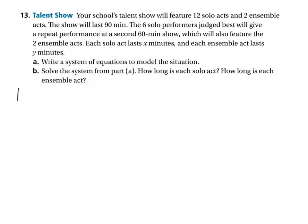So what do we get? Well, we've got 12 solo acts, each taking, here it says, each solo act lasts X minutes. The 12 solo acts lasting X minutes plus two ensemble acts. And they're telling us each ensemble act lasts Y minutes. So two ensemble acts at time Y will equal the total 90 minutes. So that's one equation. Twelve solo acts at X minutes each and two ensemble acts at Y minutes each will equal the 90 minutes.